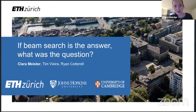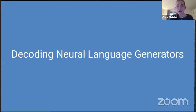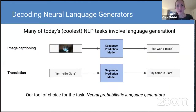Many of you are probably familiar with the topic of decoding neural language generators, but I'll give a brief recap and define the exact problem we're considering in this paper. Many of today's coolest NLP tasks involve language generation — think image captioning and translation. These are tasks where we have a model basically generating text.